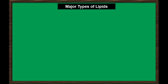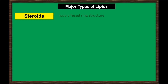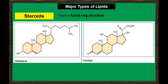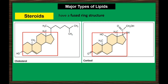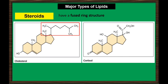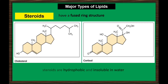Unlike other types of lipids, steroids have a fused ring structure. All steroids have four linked carbon rings, have a short tail like in cholesterol, and many steroids also have the hydroxyl functional group, which puts them in the alcohol classification. Most steroids do not resemble the other lipids, but like others, they are also hydrophobic and insoluble in water.